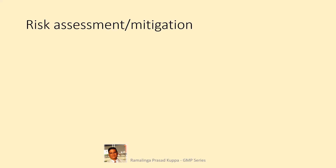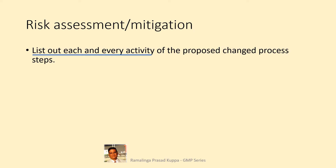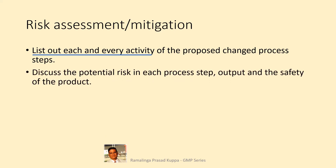Let us see how the risk assessment and the mitigation plans are done. List out each and every activity of the proposed change process steps. In risk assessment, the first step would be to list out each step carefully. Do not jump to the conclusion that a step is very minor and need not be included. The decision of minor should be made only after evaluation. Discuss the potential risk in each step output and the safety of the product. The probable risk to process and product operation should be discussed in detail here.